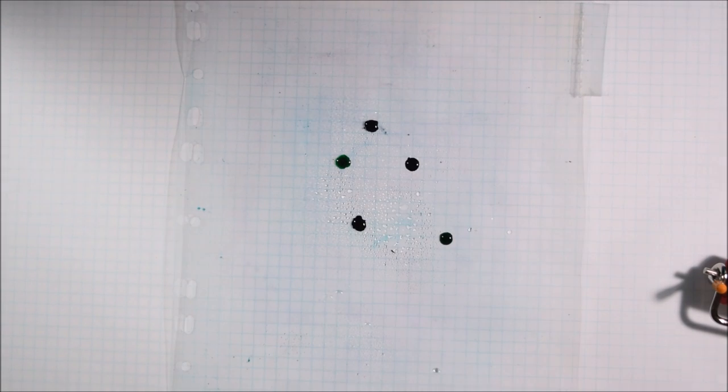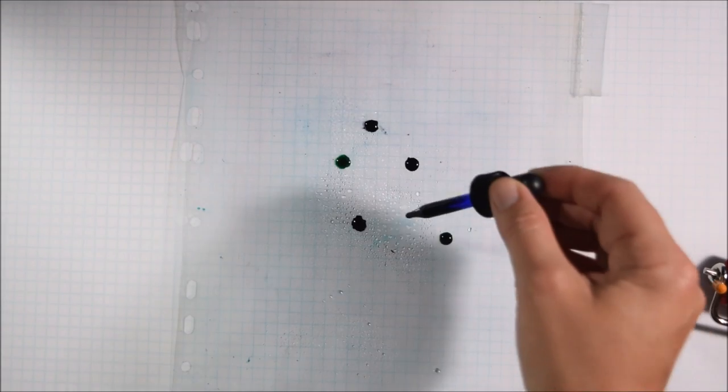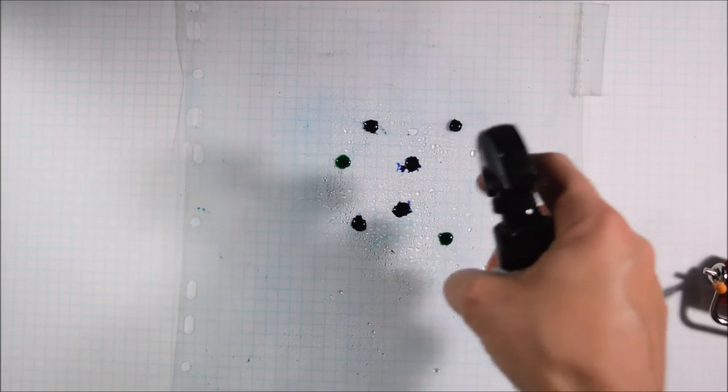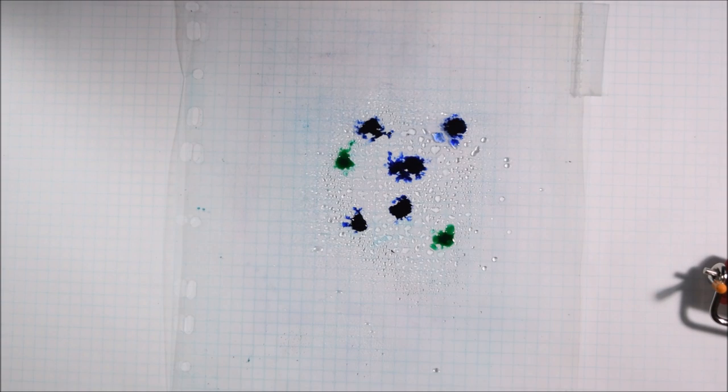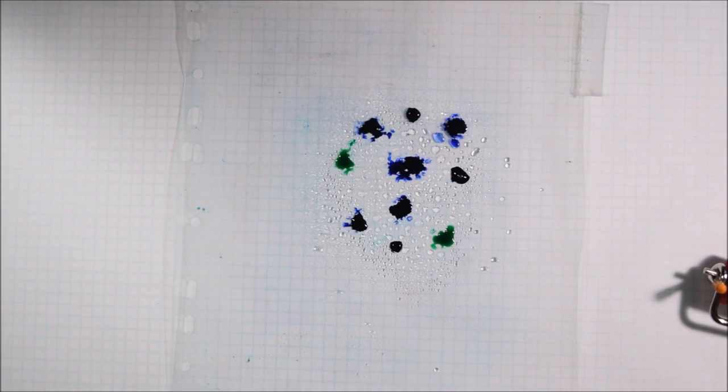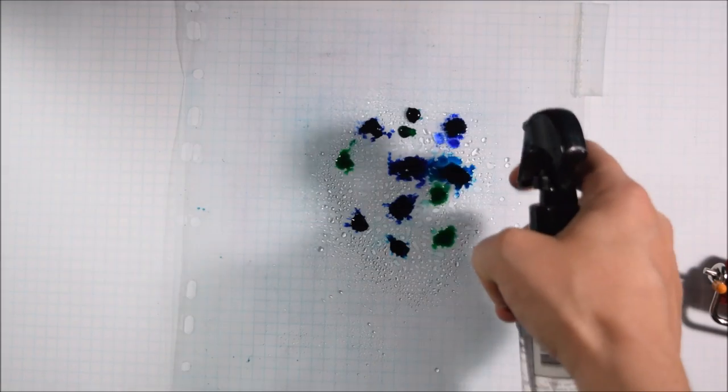I had some of the mermaids from the Lawn Fawn Mermaid for You stamp set already colored and cut, so I decided that would be perfect. They would go well with a watercolor background, but I wanted to try something a bit different. So I'm actually using Distress Reinkers right here. I'm using Salty Ocean, Cracked Pistachio, and Blueprint Sketch.